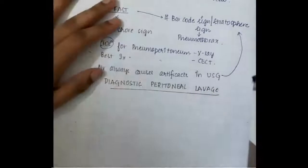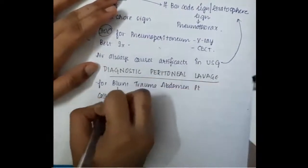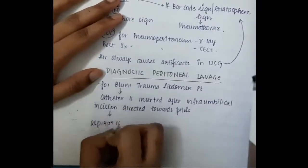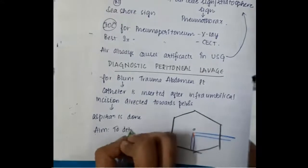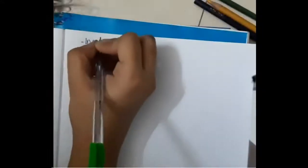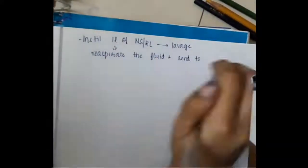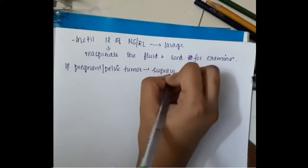Diagnostic Peritoneal Lavage (DPL) is done for blunt trauma abdomen patients. A catheter is inserted after an infra-umbilical incision, directed towards the pelvis, and aspiration is done to detect intraperitoneal fluid. 1 litre of normal saline or Ringer's lactate is instilled, then re-aspirated and sent for examination. At least 400 ml of fluid should be re-aspirated.